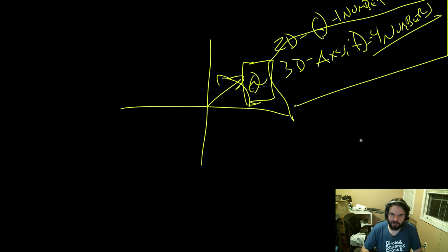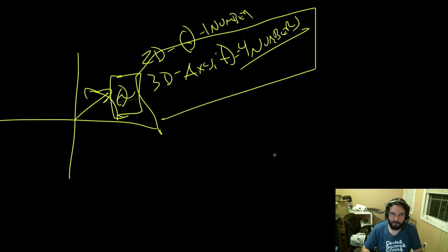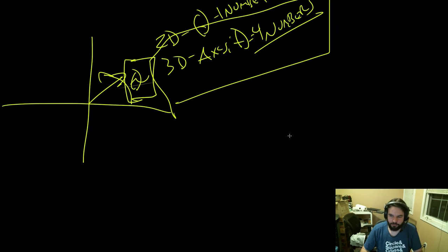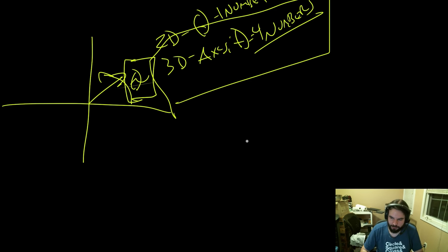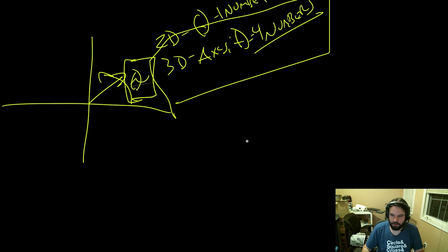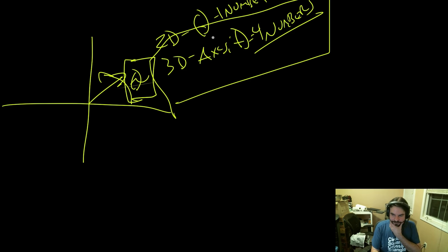I feel like that's probably the thing that's missing from most explanations of quaternions. The quaternion is just the 2D equivalent of just a theta — it's axis plus angle. Are we clear up to this point? Are we all happy?